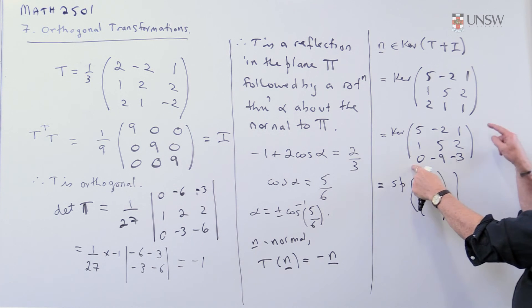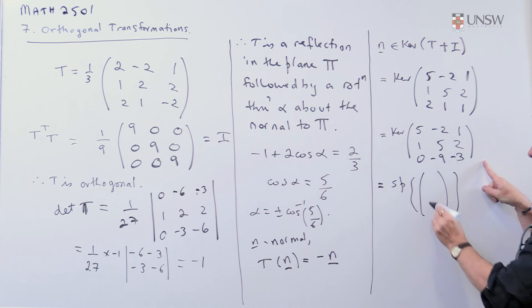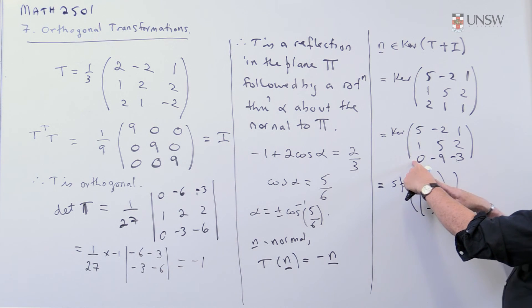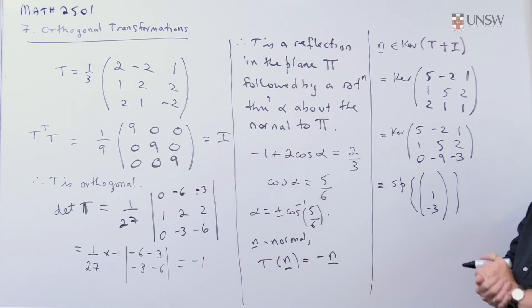Look at the bottom row. I want something, something, something there that will dot product to give me zero. So I'll take one of those and minus three of those. That will work. I don't care what goes here at the minute. That's zero, minus nine, plus nine, zero.